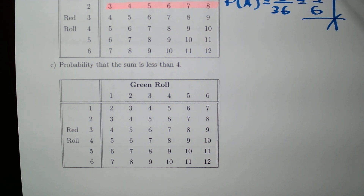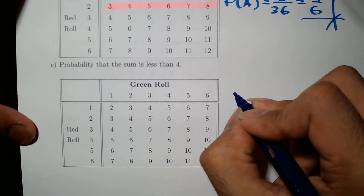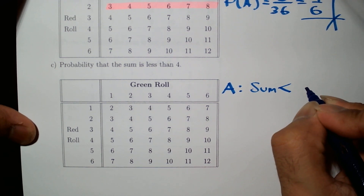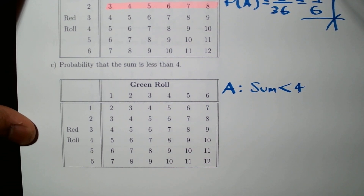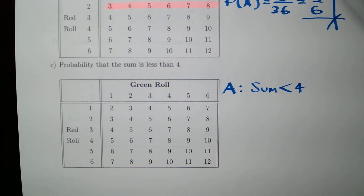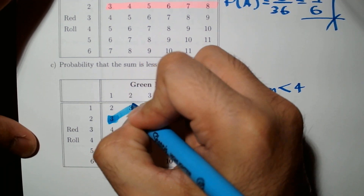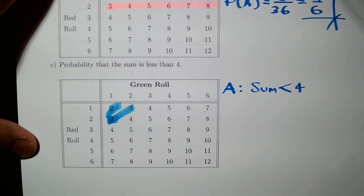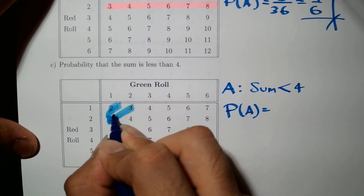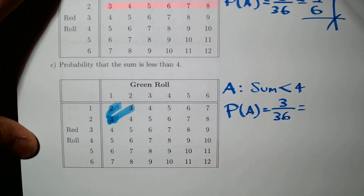Now let's find the probability that the sum is less than 4 — notice it's less than 4, not less than or equal to 4, so it does not include 4. I'll define event A as: sum less than 4, and highlight only those outcomes. The number of successes is 3 out of 36 total possible outcomes, giving us 1/12.